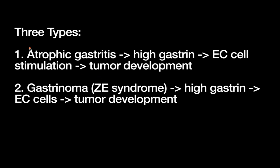The second type is similar — it's also gastrin-driven — but in this case the underlying cause is a gastrinoma. You might remember this as Zollinger-Ellison syndrome, or ZE syndrome. This gastrinoma secretes high levels of gastrin, which again stimulates the EC cells and leads to proliferation and tumor development, producing a gastric neuroendocrine tumor.